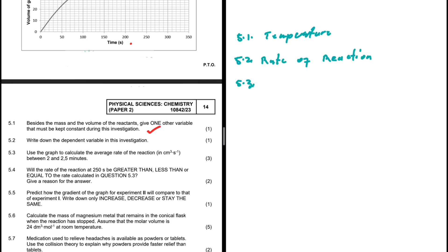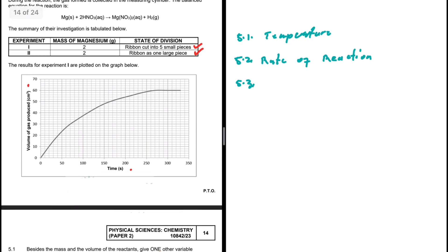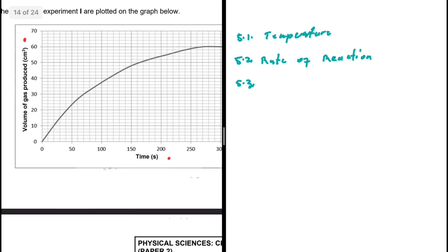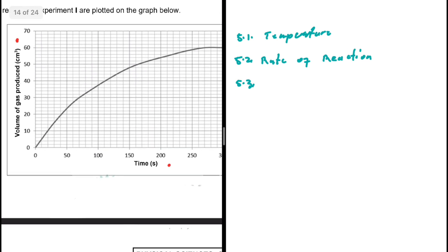Question 5.3: use the graph to calculate the average rate of the reaction in centimetre cubed per second between 2 and 2.5 minutes. Let's go to our graph — between 2 and 2.5 minutes.